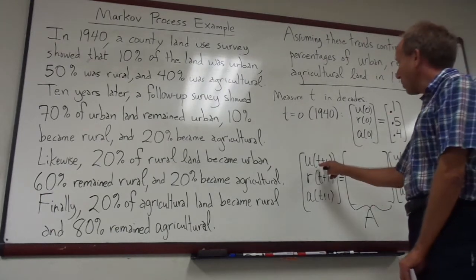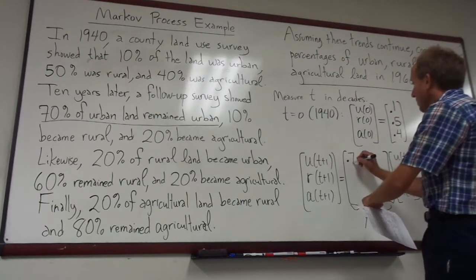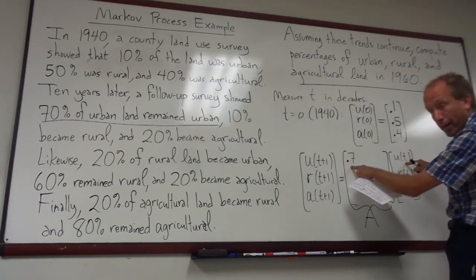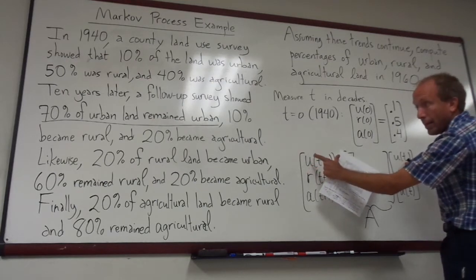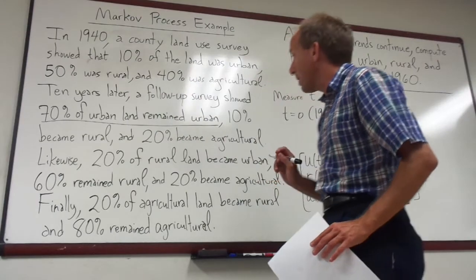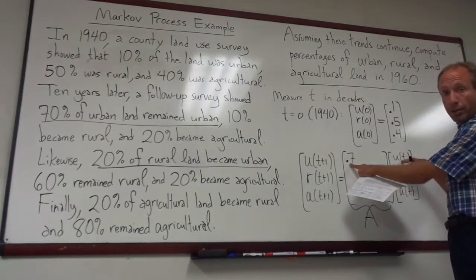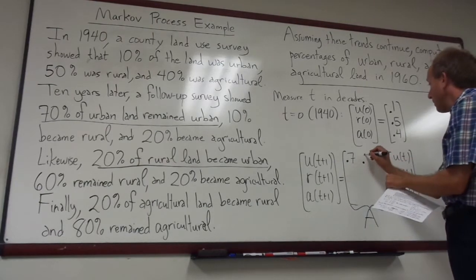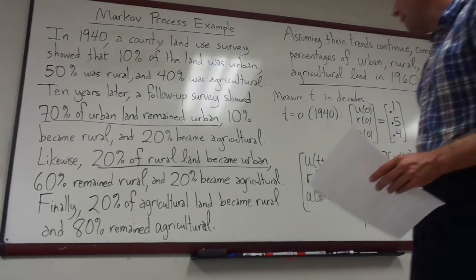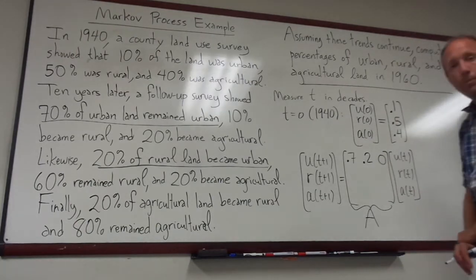So what land becomes urban? 70% of the urban land remained urban, so that gives us 0.7 times U(T). 70% of the current urban land will still be urban next decade. Additionally, 20% of the rural land becomes urban. And none of the agricultural land becomes urban, so that entry is 0.